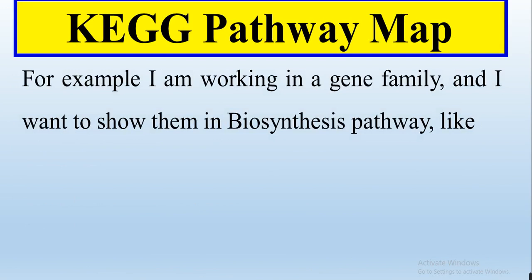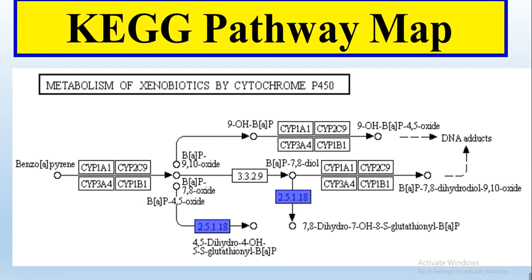For example, I am working in a gene family and I want to show them in a biosynthesis pathway. I did not know that they are working on which biosynthesis pathway and where they work. Through this analysis in TBtools, I will be able to know that my genes were working on metabolism of xenobiotics by cytochrome P450 and they are working in this type of pathway.